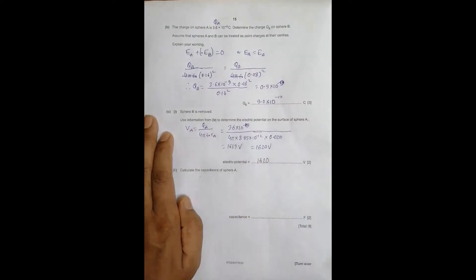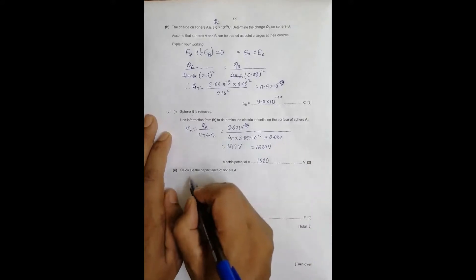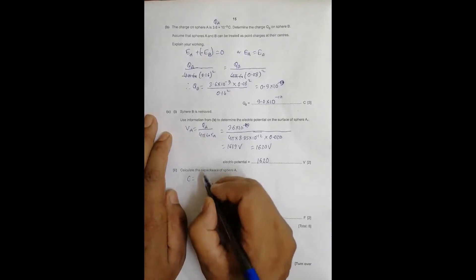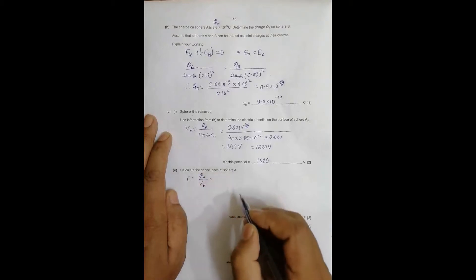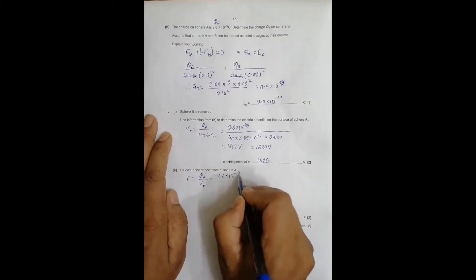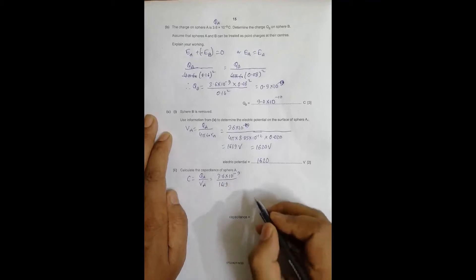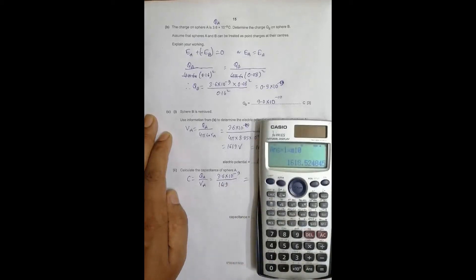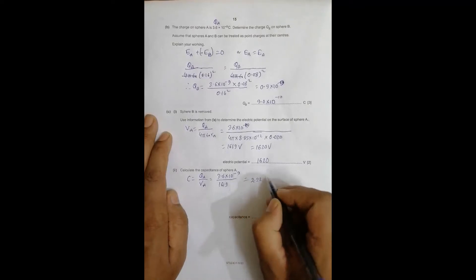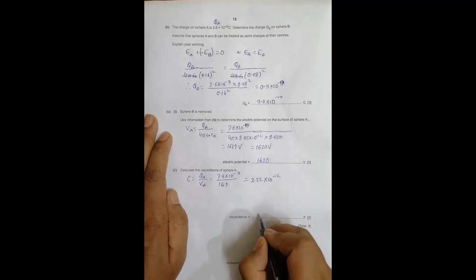Finally, calculate the capacitance of sphere A. Capacitance C = Q/V or equivalently 4πε₀R. Using C = QA / VA = 3.6×10⁻⁹ / 1619, the calculation gives C = 2.22×10⁻¹² F. This is 2.22 picofarads, but expressed in farads it is 2.22×10⁻¹² F.